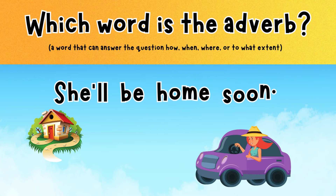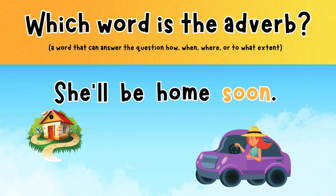Let's try another one. She'll be home soon. Which one answers the question how, when, where, or to what extent? Does she'll describe how she got home? Be? Home? Or soon? Soon answers the question when. When will she be home? She'll be home soon.